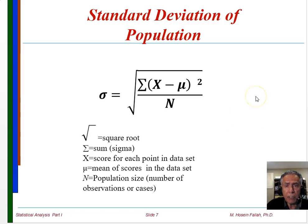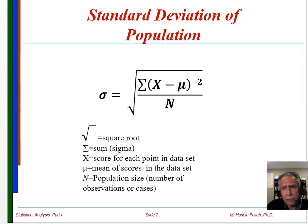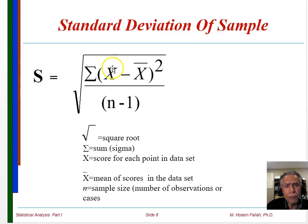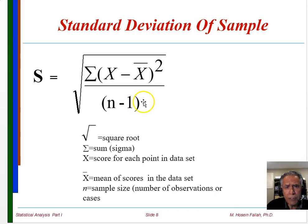The standard deviation of a population is calculated by taking individual data samples minus the mean value, squaring that, dividing by the total population size, and taking the square root. The same formula applies for a sample, except we use the sample mean instead of the population mean, and we use n minus 1 instead of N — subtracting 1 for the degree of freedom. If the sample is very large, n minus 1 does not really make any difference in the calculation.